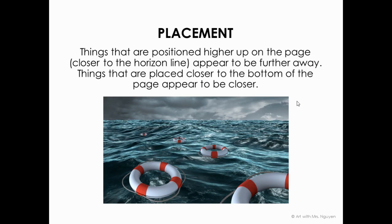Next is placement. Things that are positioned higher up on the page, closer to the horizon line, appear farther away. Here's our horizon line where the sky meets the turbulent-looking water. You can see that these buoys — the placement definitely gives the illusion of space. The ones up front are very big; in fact, one goes right off the page. As you get further back they look much tinier, and one far back would probably just be a dot. Objects' placement can help create the illusion of space.